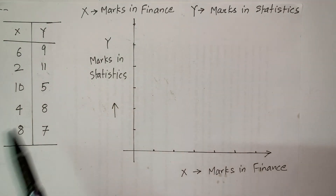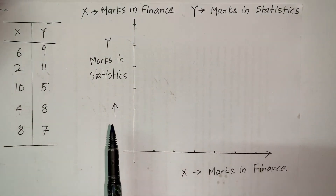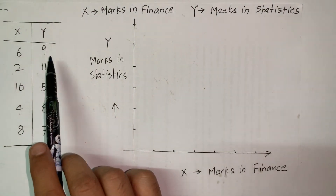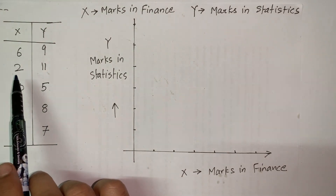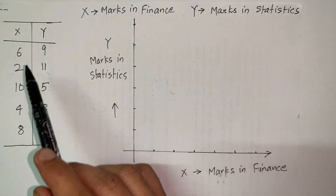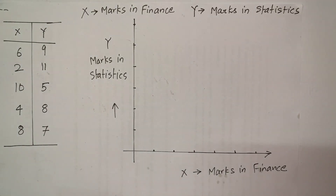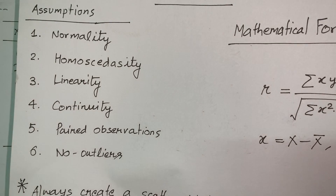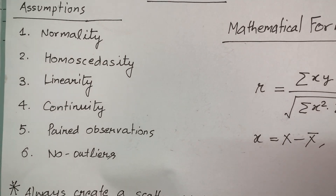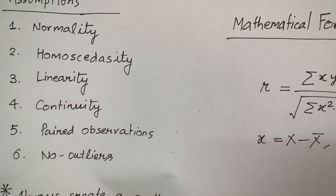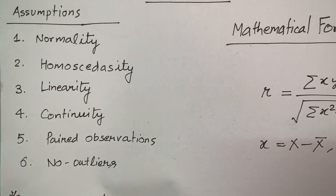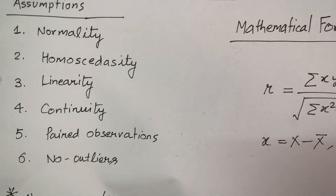There are five students whose marks are taken, so we have five paired observations. The first student scored 6 in finance and 9 in stats; the second scored 2 and 11; the third 10 and 5; the fourth 4 and 8; and the fifth 8 and 7. The number of students is pretty small, which is not ideal, but for ease of calculation I'm keeping the dataset small. The data exists in pairs and marks can be continuous, taking decimal values.